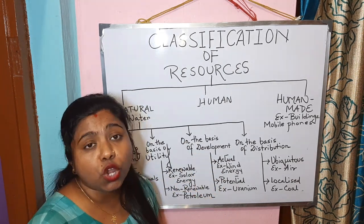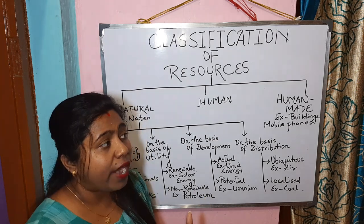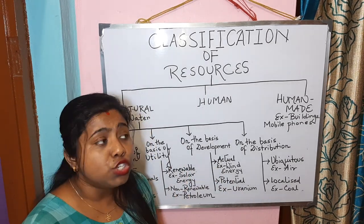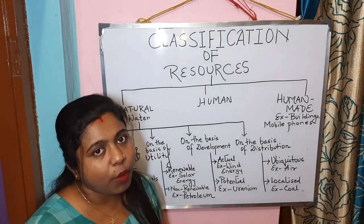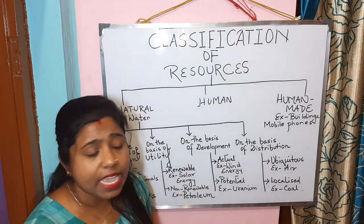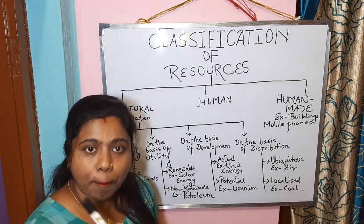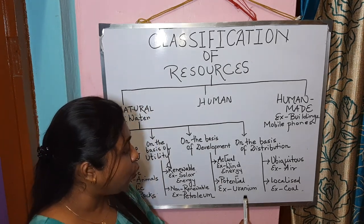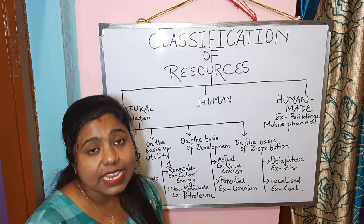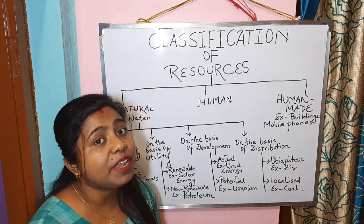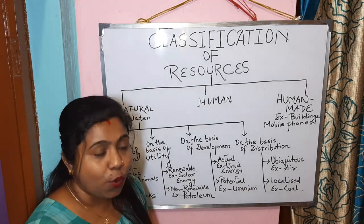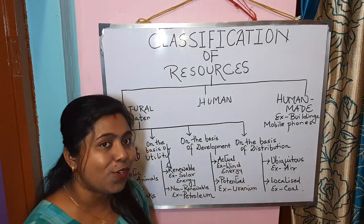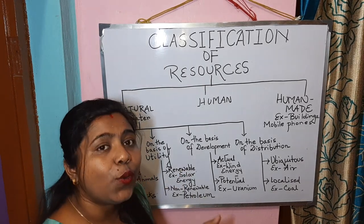Potential resources are resources whose exact quantity and location are not fully known to us, and the technology to utilize them is not yet available, so they cannot be utilized at present — but they do have the potential to be utilized in the future. For example, uranium found in Ladakh can be utilized in the future when the technology becomes available. An actual resource can get depleted, but a potential resource can turn into an actual resource in the near future.